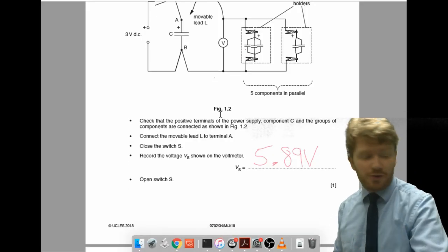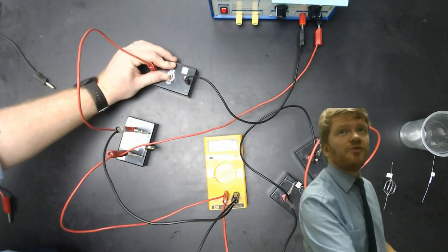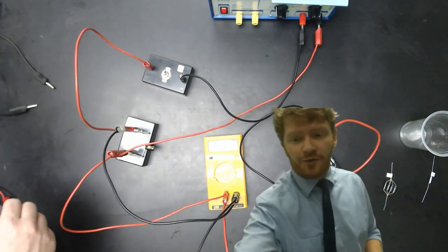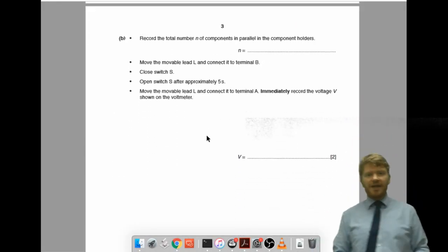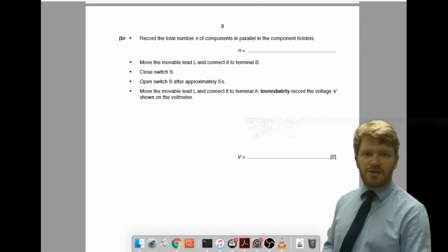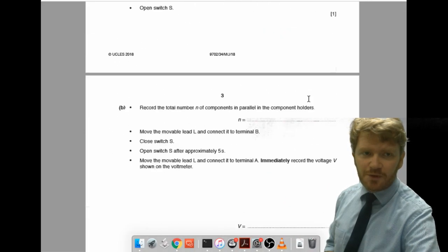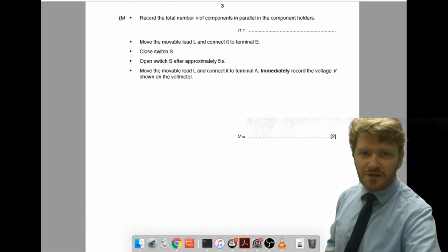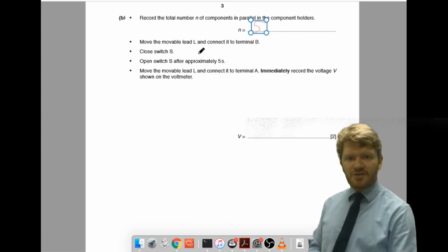I'm then told to open switch S. So, open means open circuit or switch it off. So, I've done that. It then says record the total number N of components in the parallel component holders. Well, I'm just going to do this on the screen because it's just easier to see it that way. So, you can see I've got 1, 2, 3, 4, 5 components all in parallel there. So, I'm just going to write in that. It's 5.